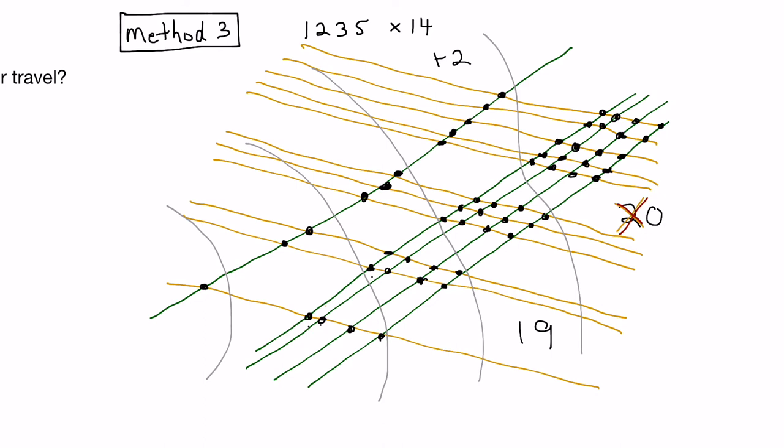And again, you take the tens digit and you carry it over to the next column. And you simply repeat the process. So in this area, we count and get 11, plus the carry is 12 dots. So we write the 12 dots here and carry the 1 tens digit to the next area.